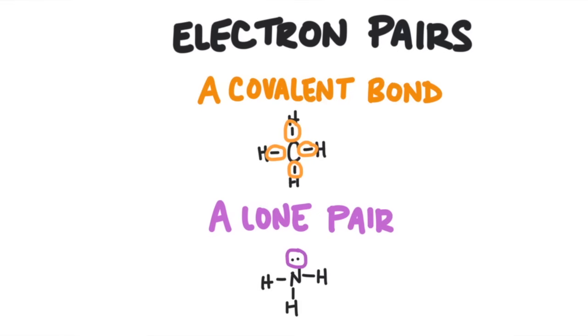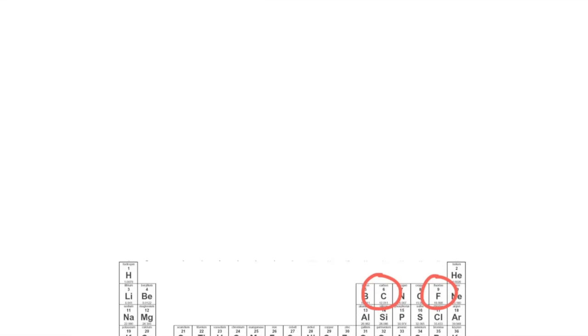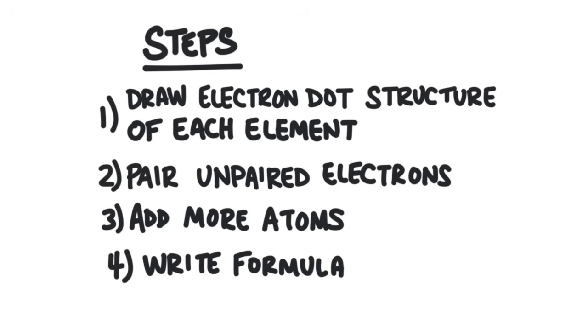Let's see how to determine the chemical formula of a covalently bonded compound. These compounds will contain elements that are non-metals. Here are the steps: first, draw an electron dot structure, also known as a Lewis structure, of each element. Next, pair up unpaired electrons. Add more atoms if required to give each element a complete octet. And then finally, write the formula.